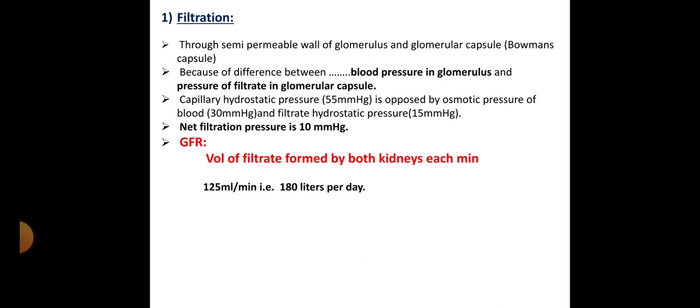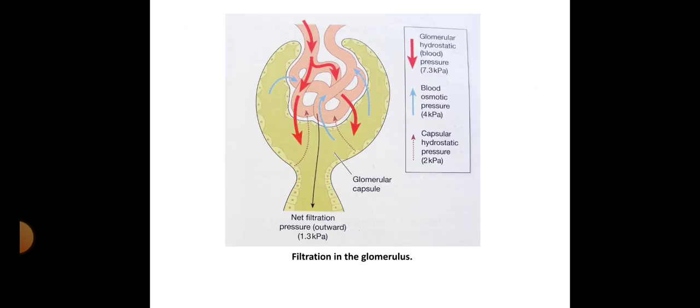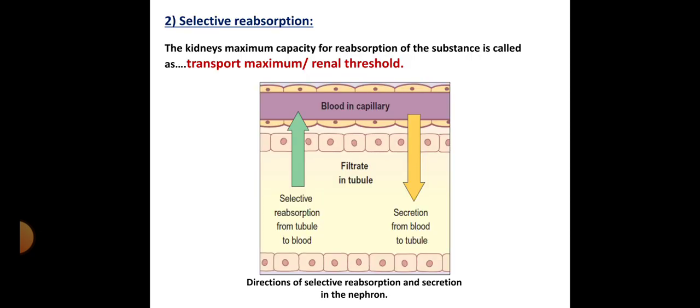Let's focus on the second phase of urine formation, which clearly explains why so little urine is excreted even though 180 liters is being filtered. Phase two is selective reabsorption — it is a process where reabsorption of contents from the tubule back into the blood occurs. Some nutrients or ingredients from the renal tubules re-enter the blood; this is called selective reabsorption.